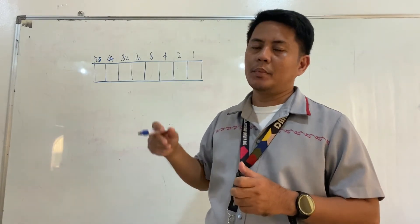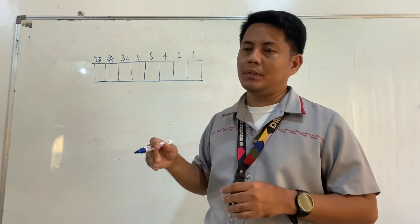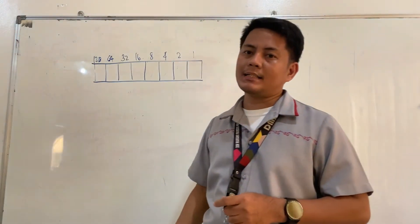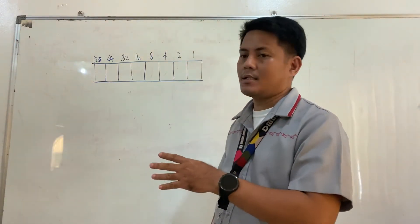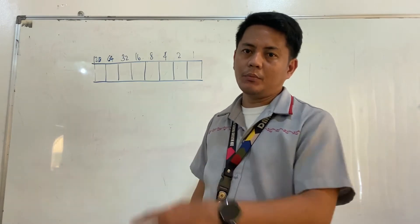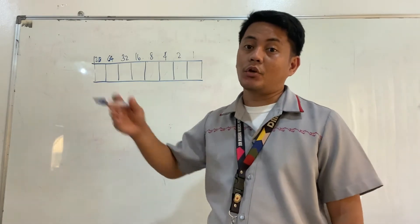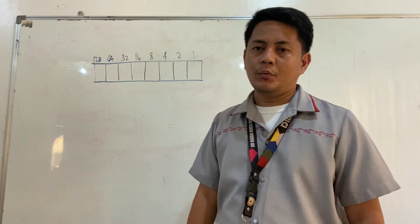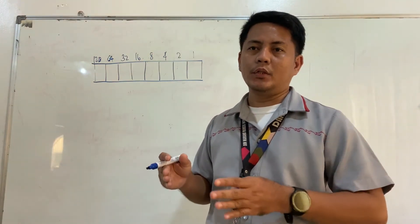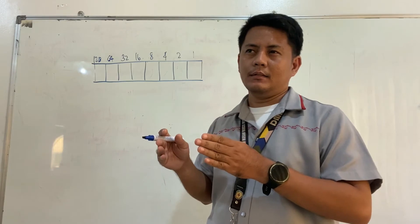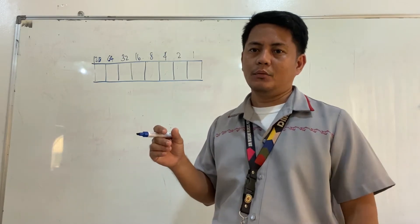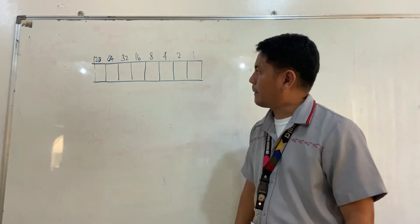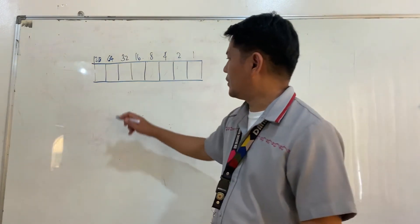If the number to be converted is higher than 255, we simply add another box — 256, 512, 1024, and so on. Since we are converting only a small number, which is 12, the 8 boxes already suffice.